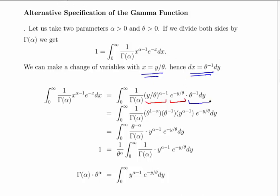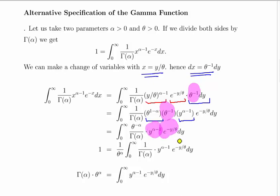After the substitution, dX becomes theta to the power of minus 1 times dY. We can express Y divided by theta to the power of alpha minus 1 as theta to the power of 1 minus alpha times Y to the power of alpha minus 1. Combining with the theta to the minus 1 from dX, we end up with theta to the power of minus alpha, giving us Y to the alpha minus 1 and e to the minus Y divided by theta, which is what we want.